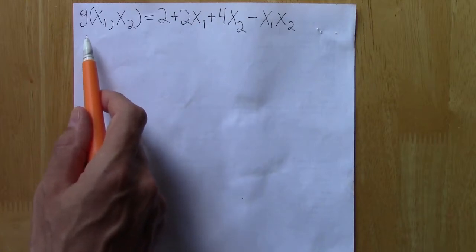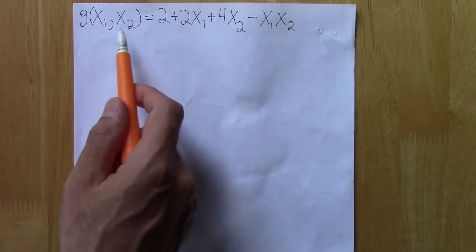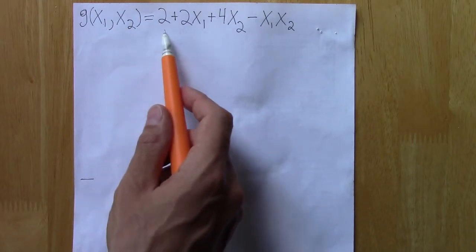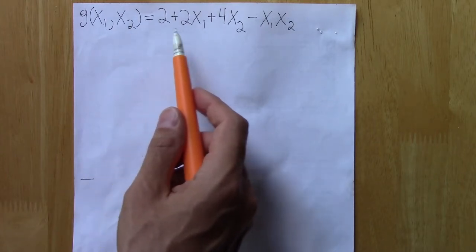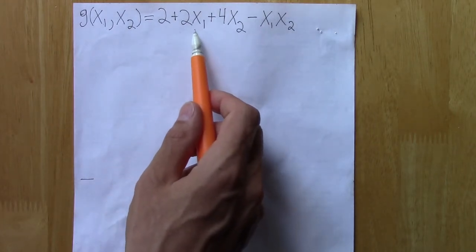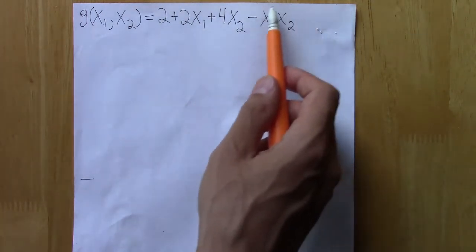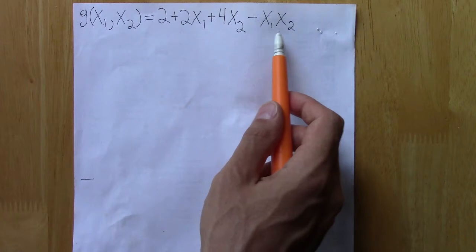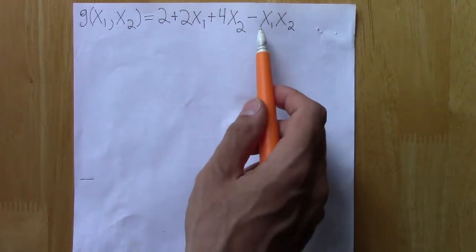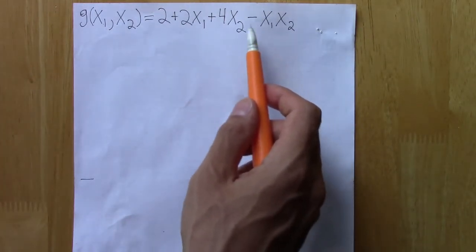So here is this g of x₁ and x₂. There's an intercept term, and then an x₁ term and an x₂ term, and then this interaction term with x₁ times x₂, where implicitly the coefficient is negative 1.